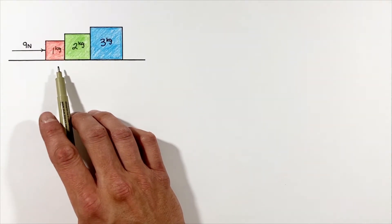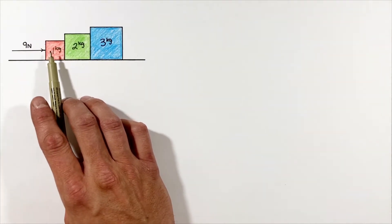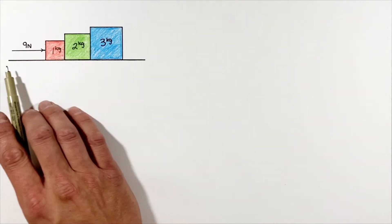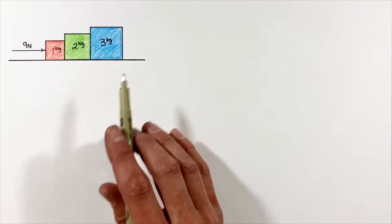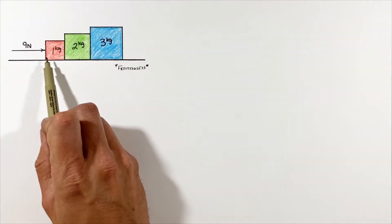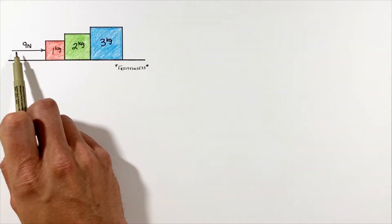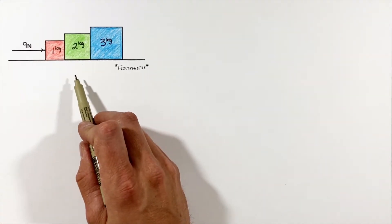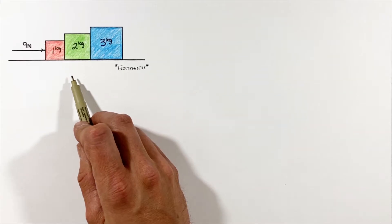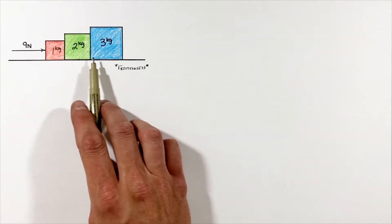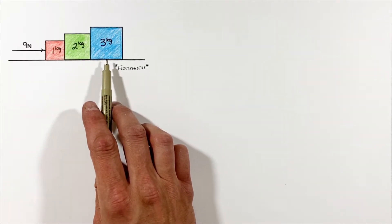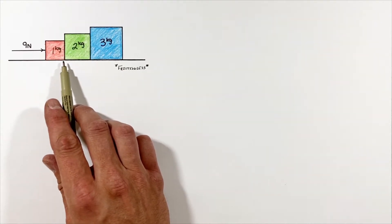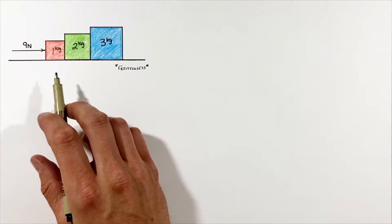Welcome to Integral Physics. Today we're going to look at a situation where we have three blocks stacked one next to the other, resting on a frictionless surface. The smallest block is being acted upon by an external force. In this problem we're going to solve for several things: first, the acceleration of the three blocks, and then the normal force between each of the blocks.